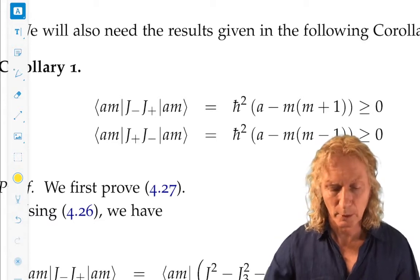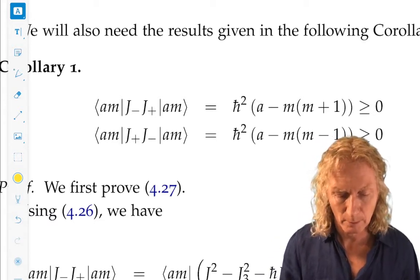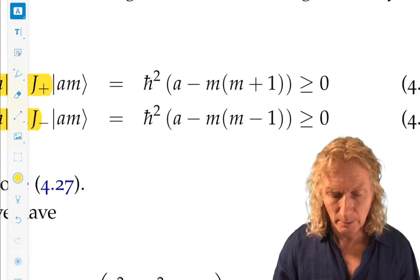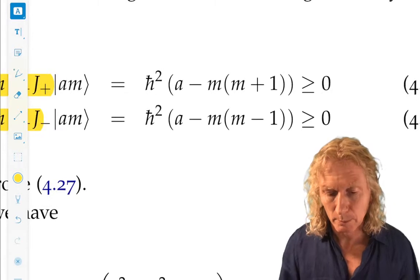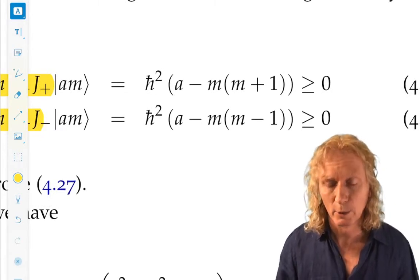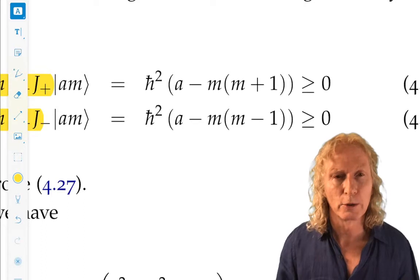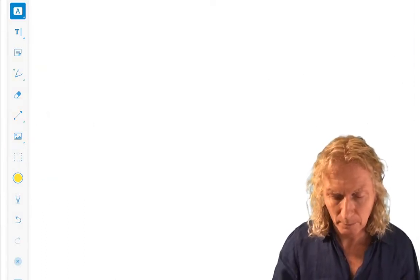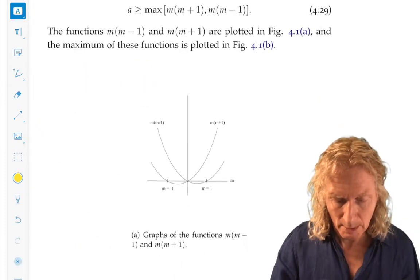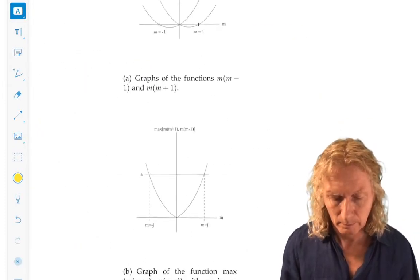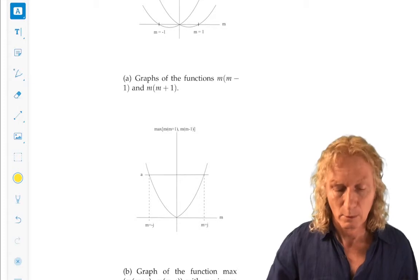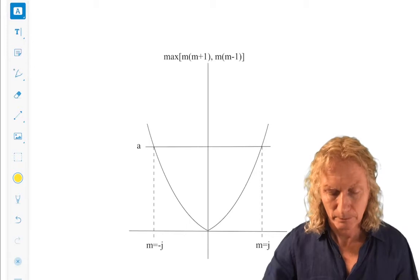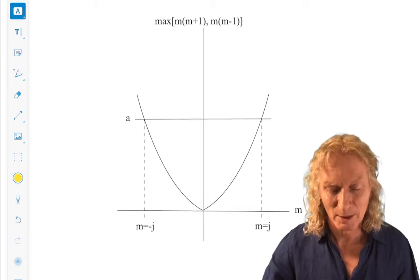Now, this expression involves J minus, J plus, in a particular order. But, because A has to be, this expression on the right has to be bigger than or equal to 0, A has to be larger than the maximum of the two. So, we have a very nice diagram, which essentially is the key to understanding everything about quantum angular momentum.